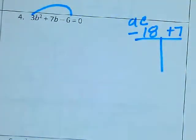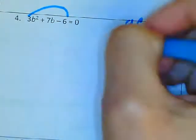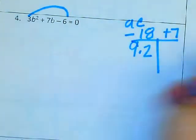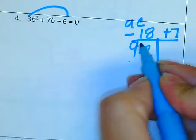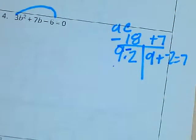So here I have to find the product that would give me negative 18, two numbers that would give me negative 18 that add up to 7. So I can think of 9 times 2, making the 2 negative, so 9 plus negative 2 would give me positive 7.